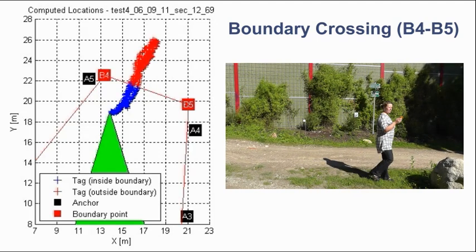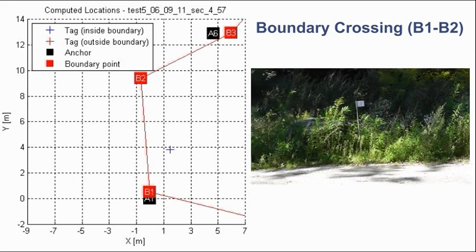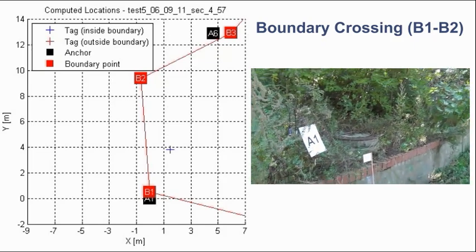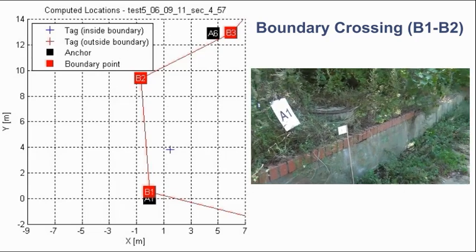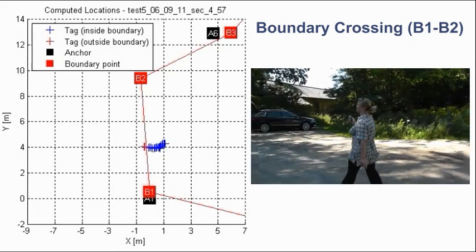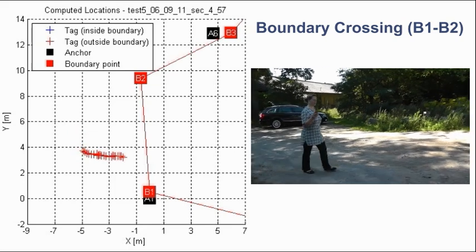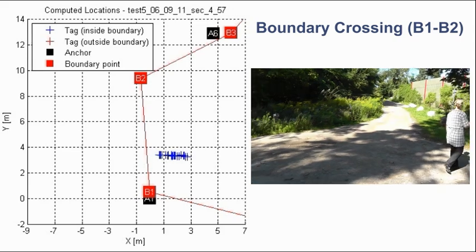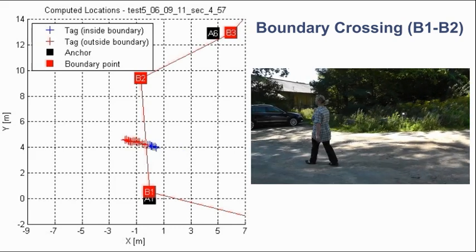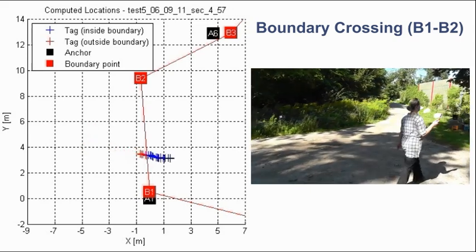Moreover, the plot of the complete trace suggests that the boundary function works consistently even after multiple runs. We repeat the previous experiment at boundary segment V1 and V2. Again we see that the boundary crossings are accurately and consistently detected.